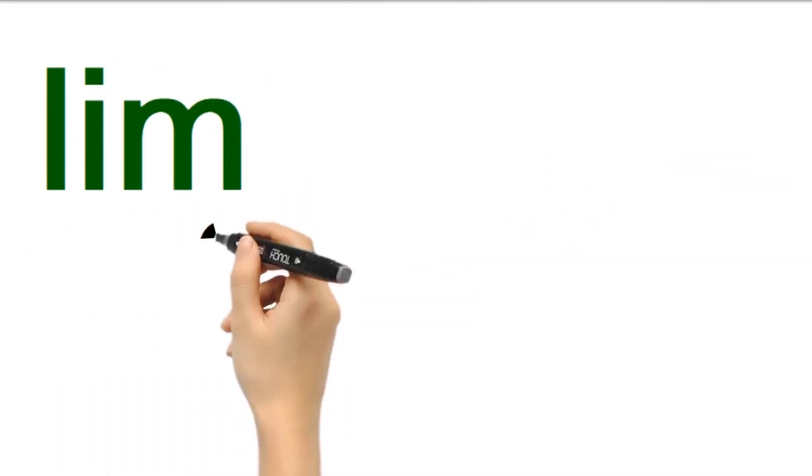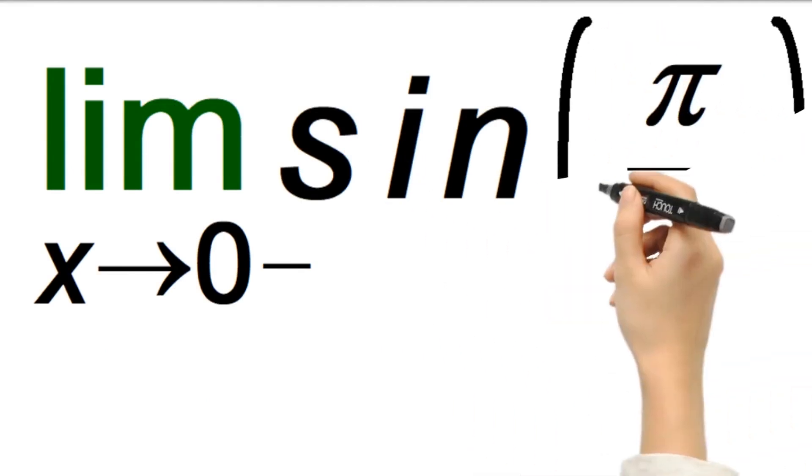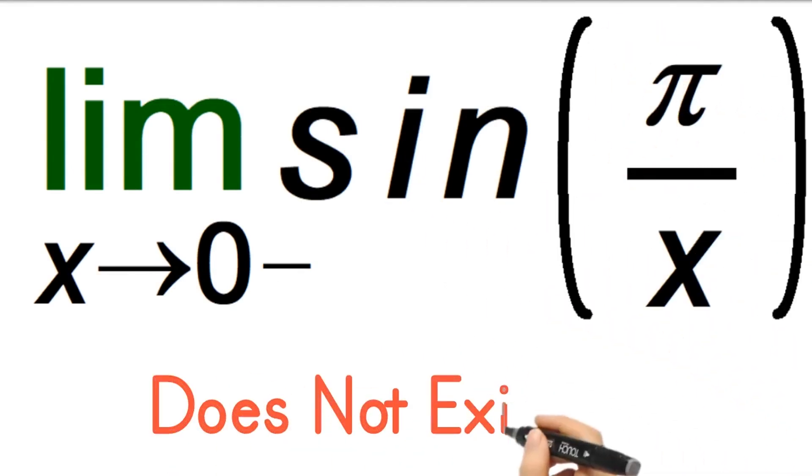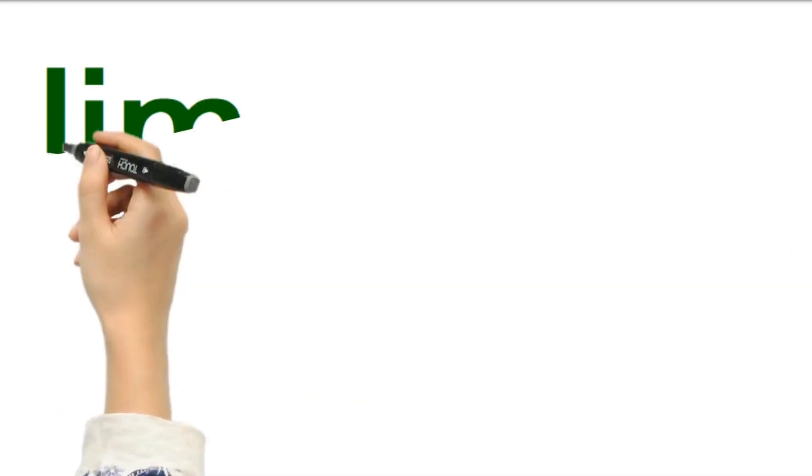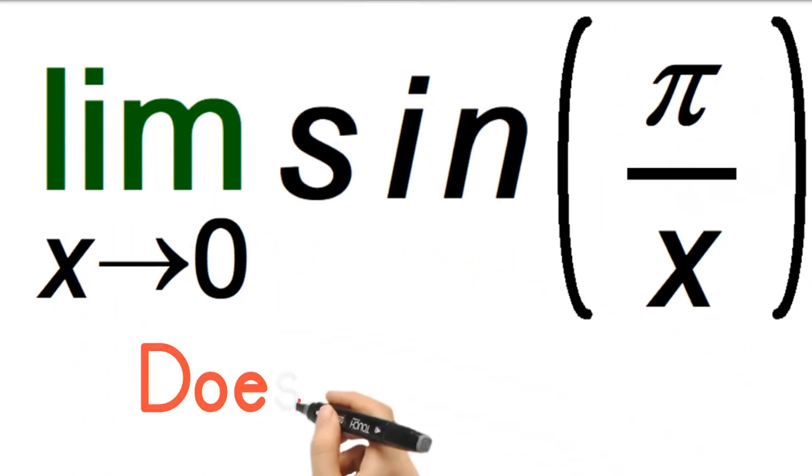A similar type of reasoning shows that the limit as x goes to 0 from the left of sine of pi over x also does not exist. The y values just jump up and down forever. This means that the limit as x goes to 0 of sine of pi over x also does not exist.